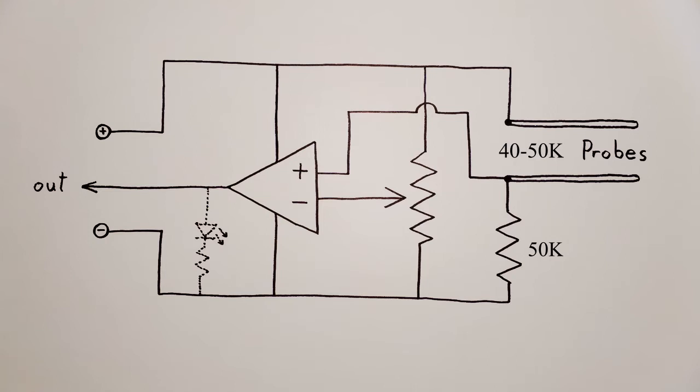When the dirt is wet, the resistance at the probes will be lower. This means that the output voltage will be higher, and if it's higher than the one of the potentiometer, the output of the op-amp will be high.